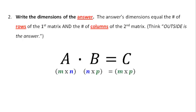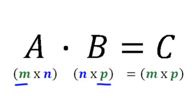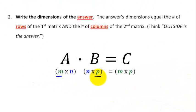Once you've confirmed the inner dimensions match, you can figure out the dimensions of the answer. I don't know what matrix C is yet, but I do know what its dimensions are. The dimensions are the same as the outside of the matrices you were multiplying — that means the rows of the first matrix and the columns of the second matrix give you the dimensions of the answer. After you do a few of these, it'll come along pretty easily.